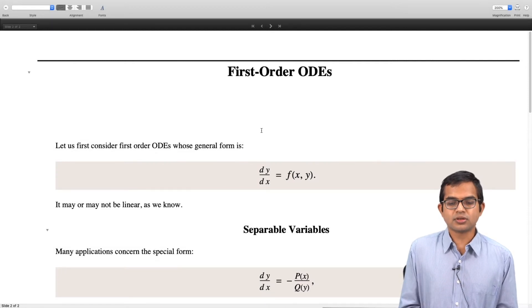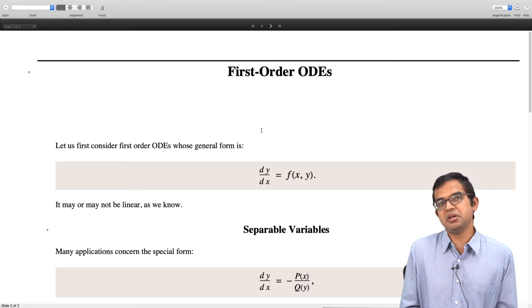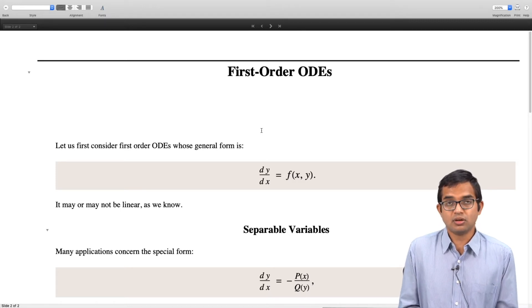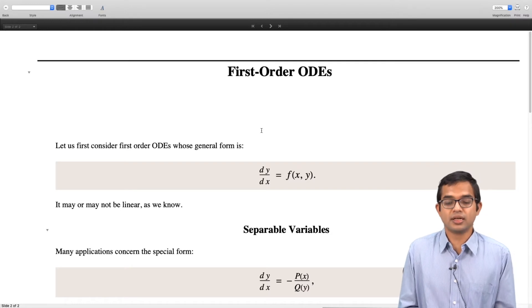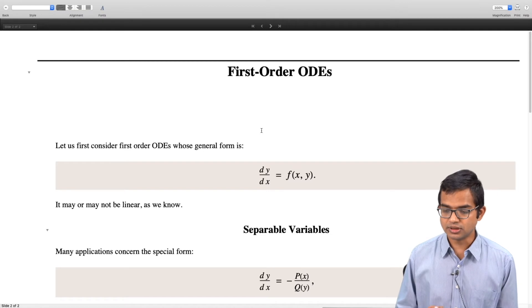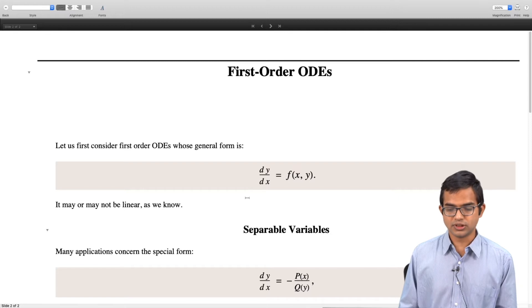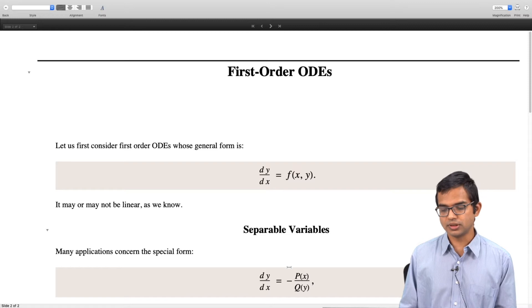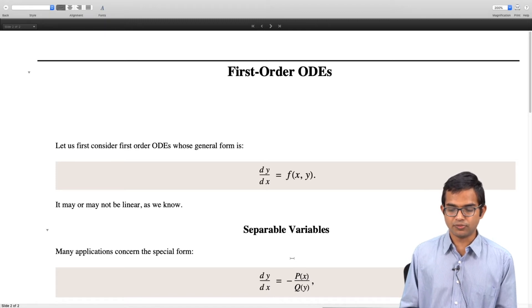A first-order ODE has this completely general form: dy/dx = f(x,y). It may be linear or non-linear, as f(x,y) can be as complicated as you want. There is a special form which is particularly convenient: if dy/dx is of this form equal to -P(x)/Q(y), then it is in a form which is called a separable form.